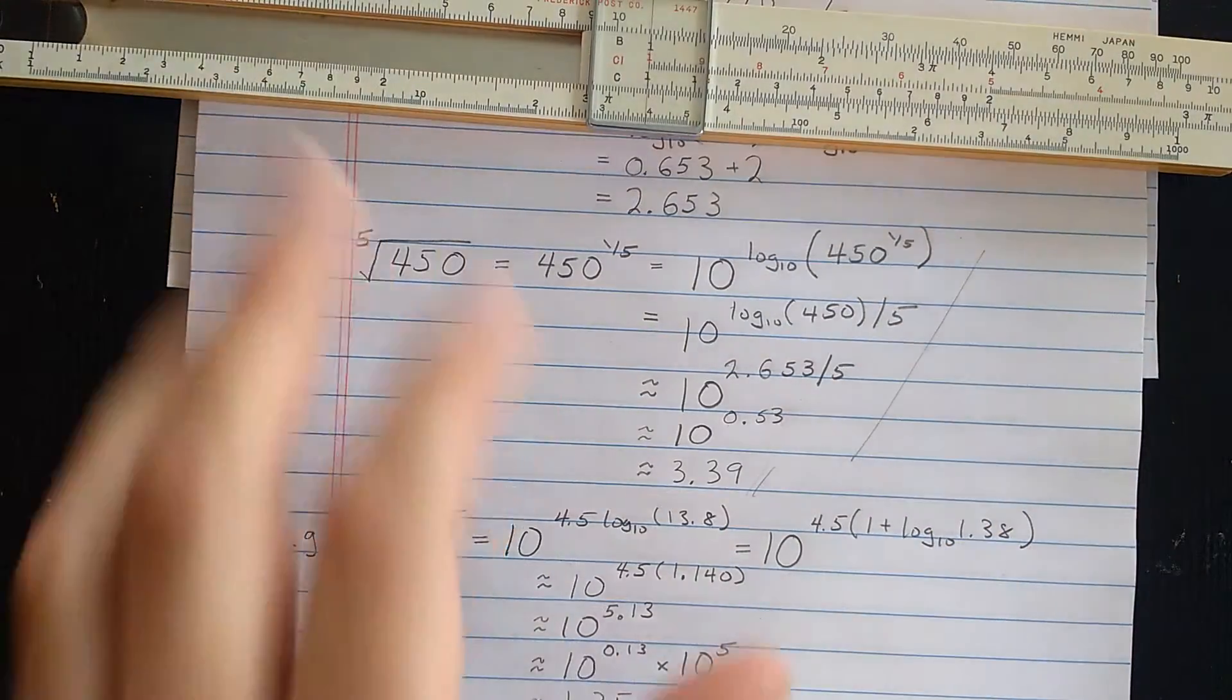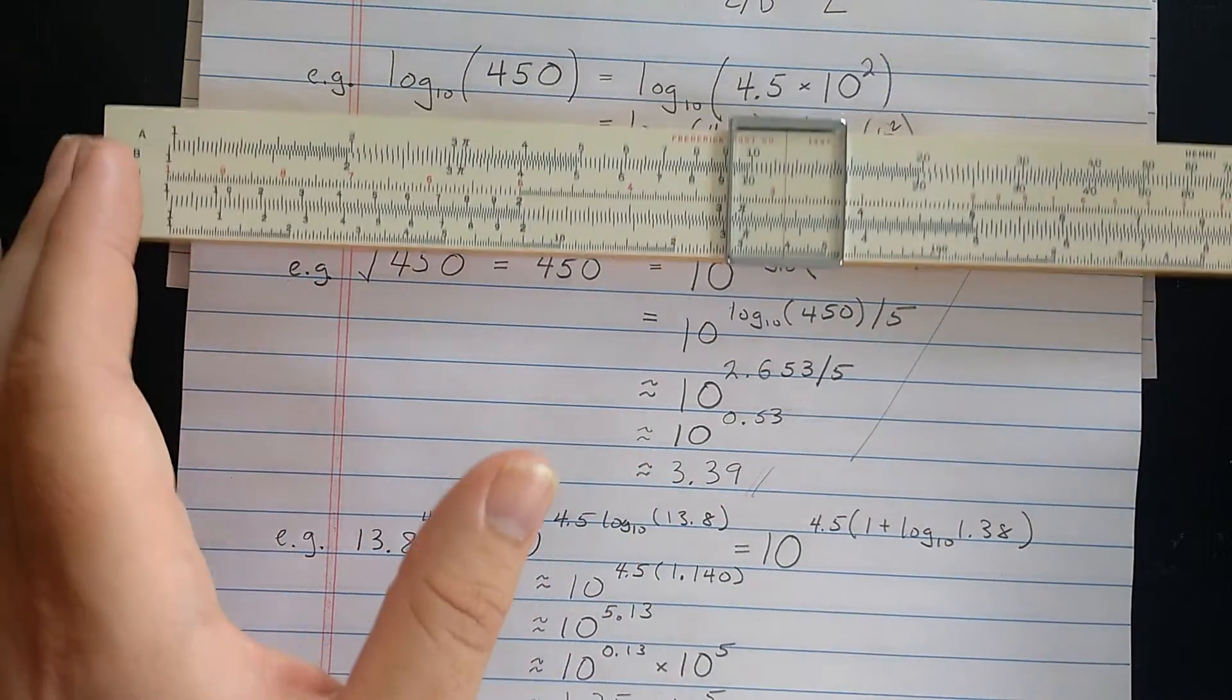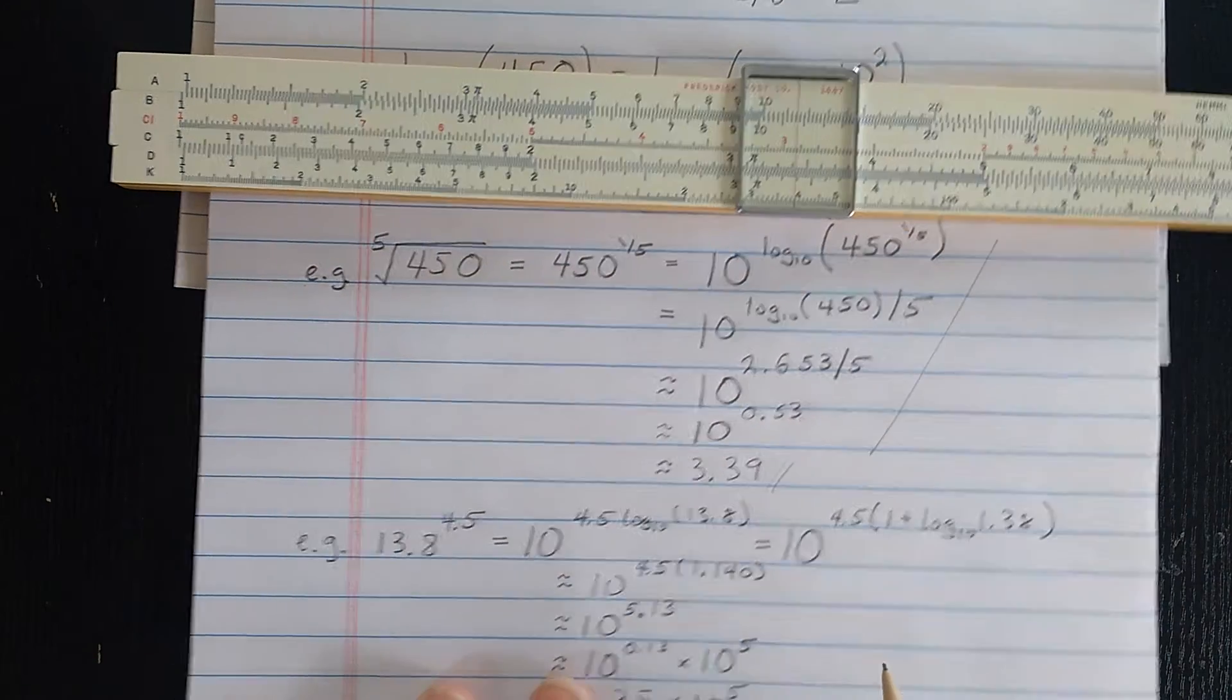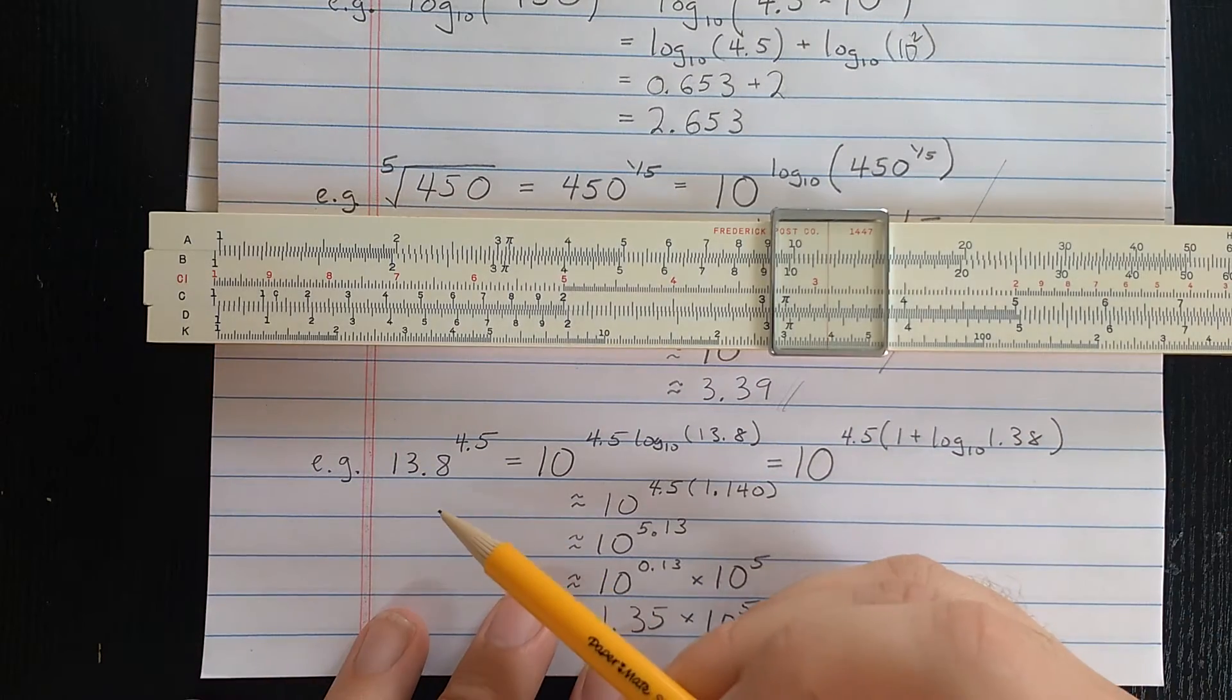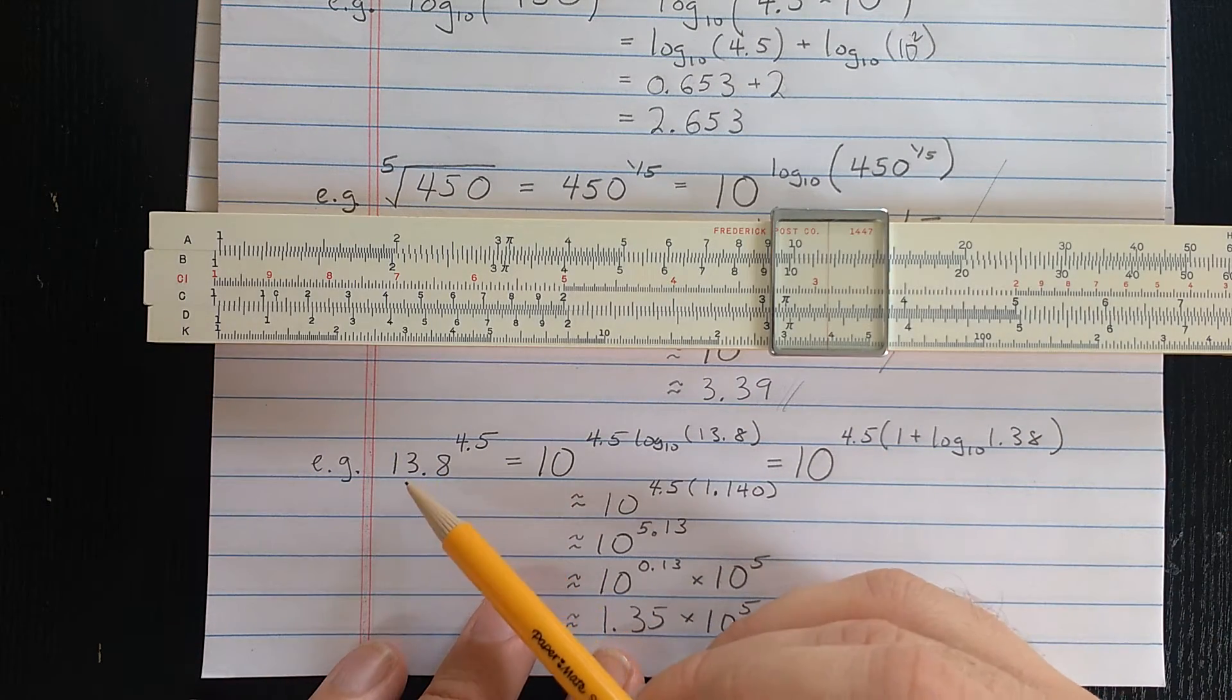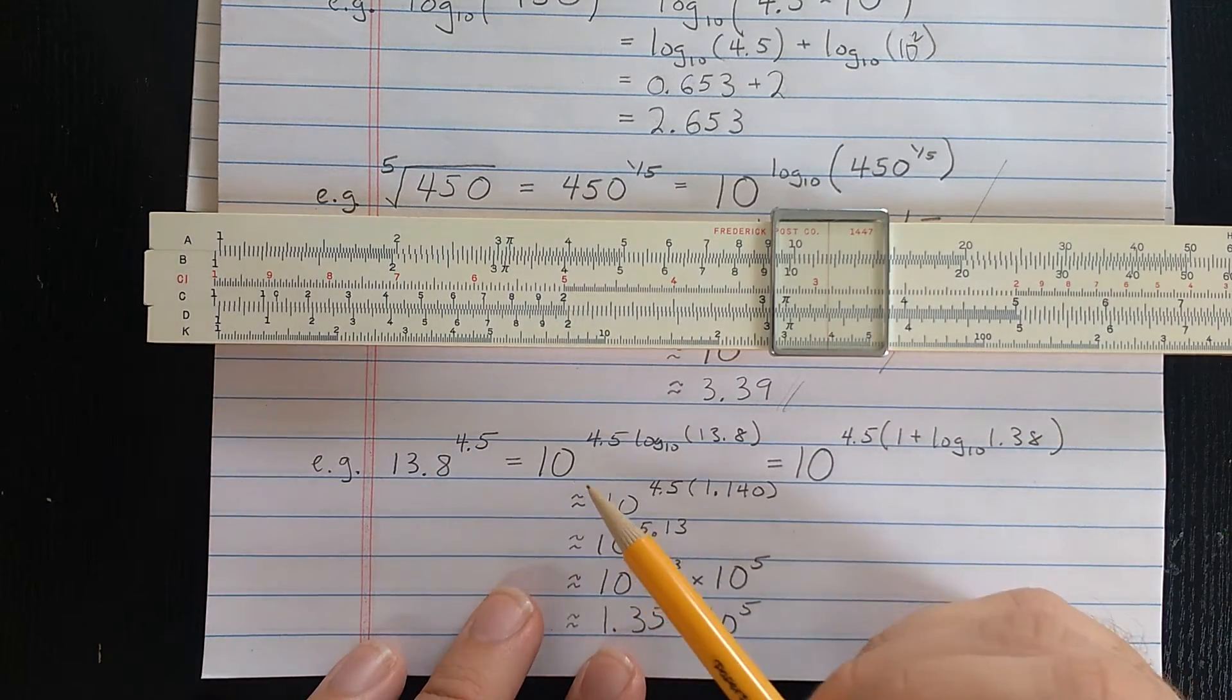If you have the log-log scales on your slide rule, you can do that computation with less work. Let's do another similar computation. I want to do an arbitrary exponent. So 13.8 to the 4.5.